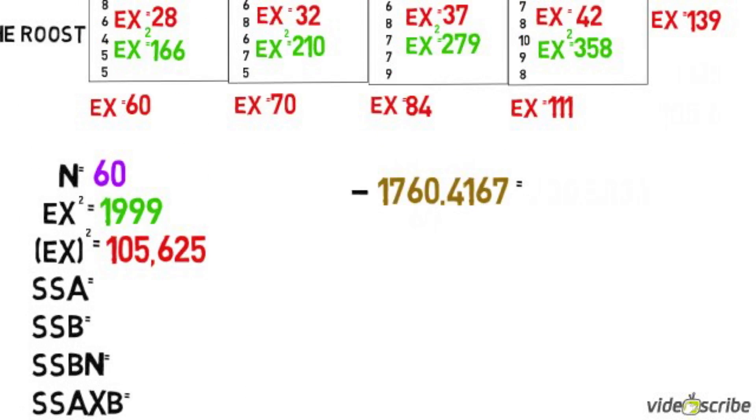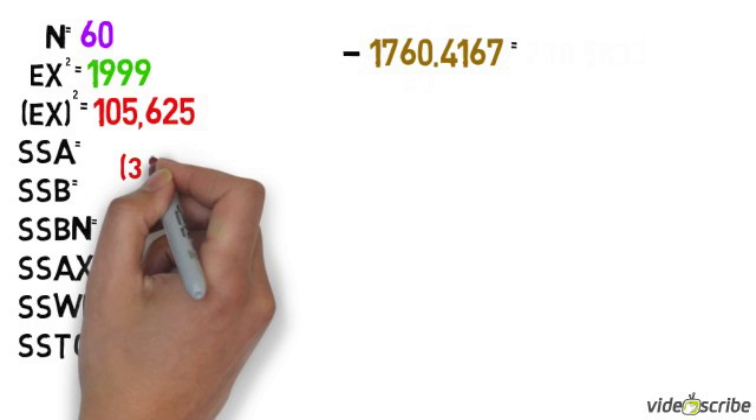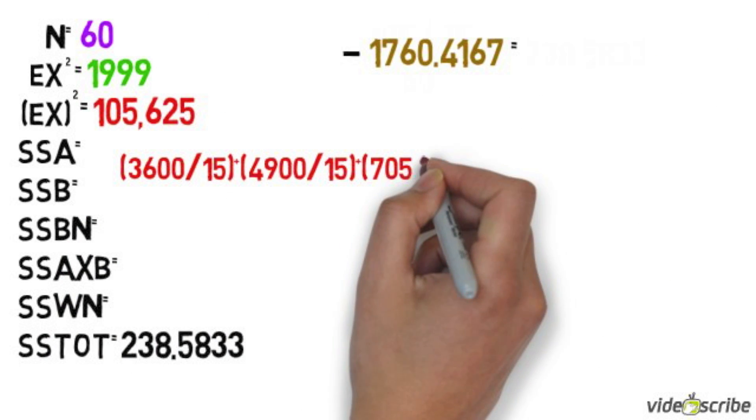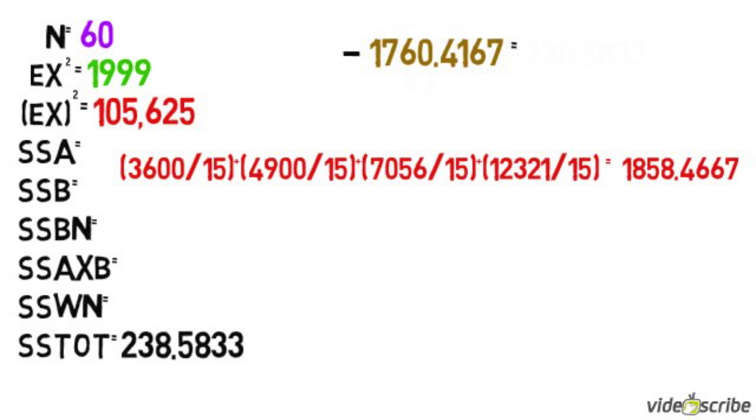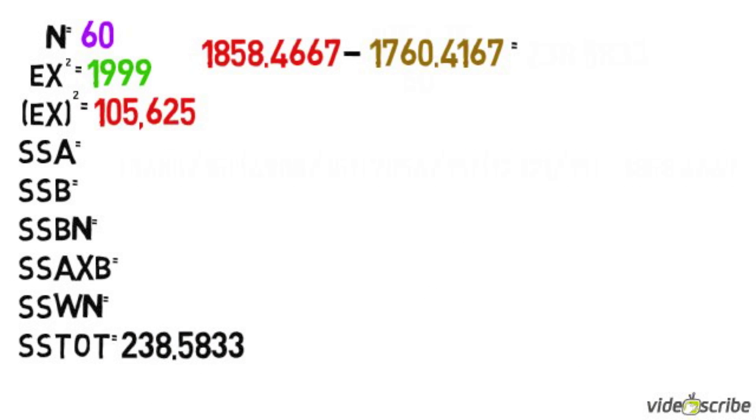To find sum of squares for factor A, we're going to use our sum of x at the bottom. We're going to calculate the n for each column, square each sum of x for the column, and then divide it by 15. Add them all together, and then subtract that by our squared sum of x divided by n.